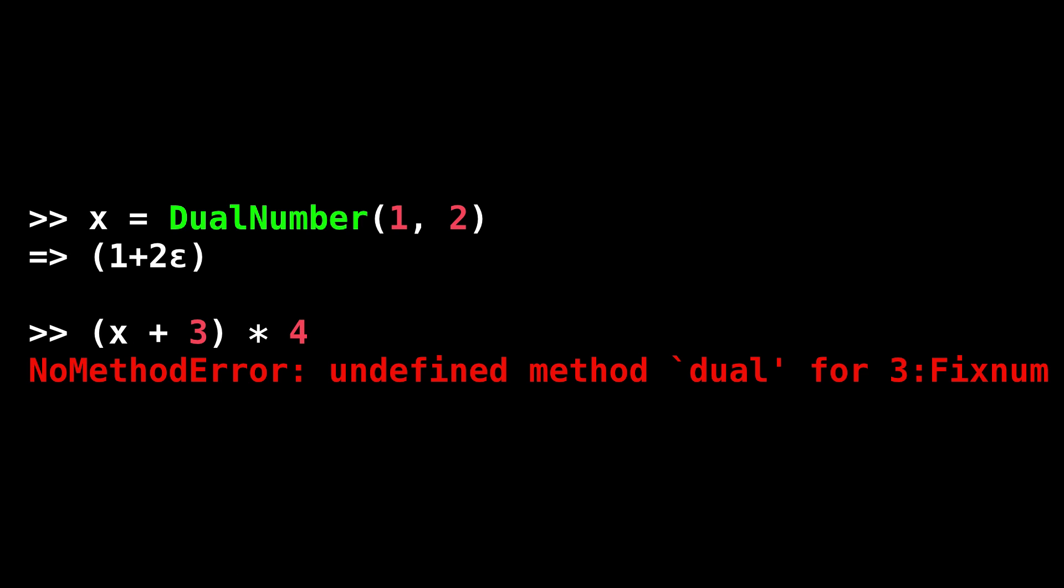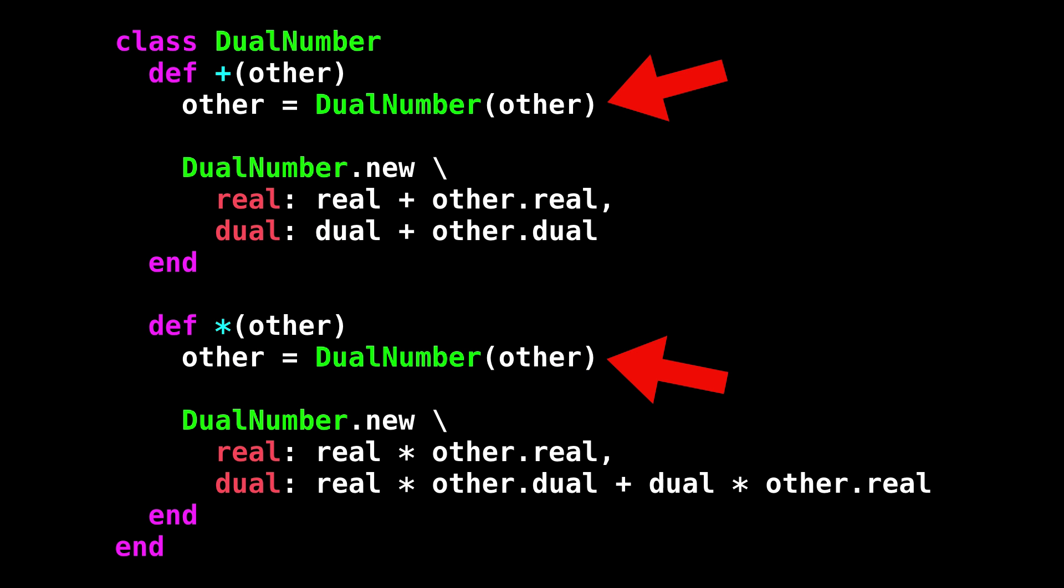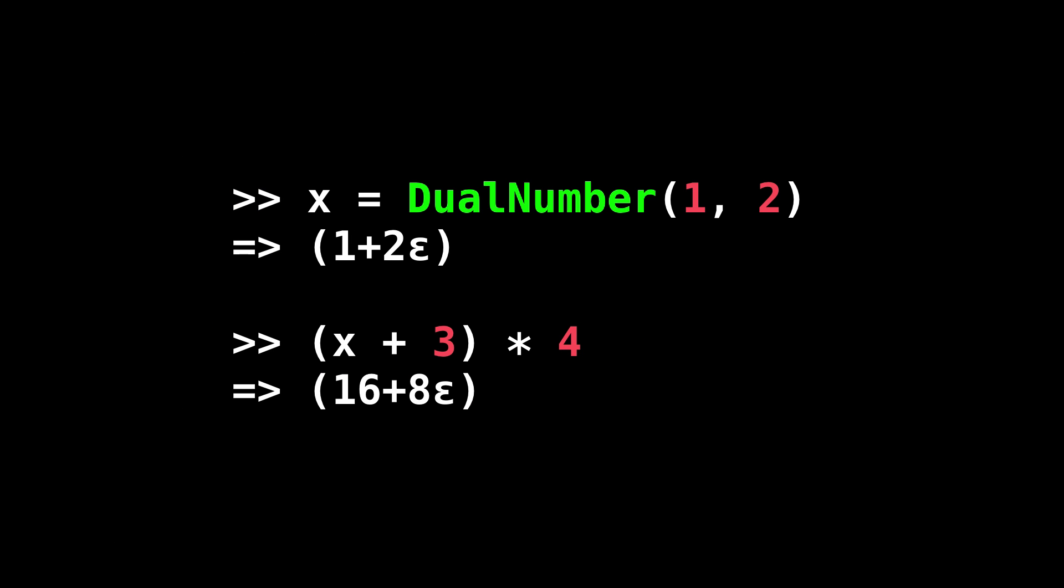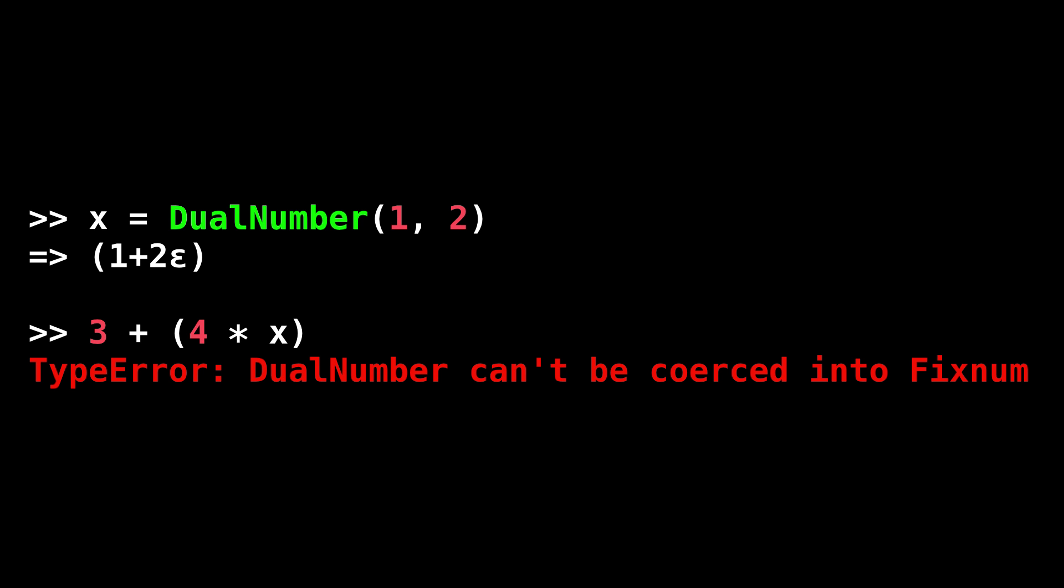We have to do a bit of work to make dual numbers compatible with Ruby's built-in numbers. Right now, if you try to add or multiply by a fixNum, we get a no method error, because our add and multiply operations are trying to get the real and dual parts of a fixNum. We can fix that by just converting the argument to a dual number inside the add and multiply methods. This is where that dual number conversion method comes in handy. And now we can add and multiply by normal numbers, they get automatically converted into dual number constants.